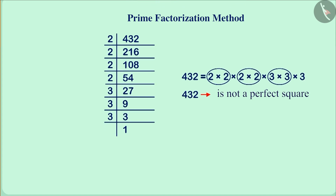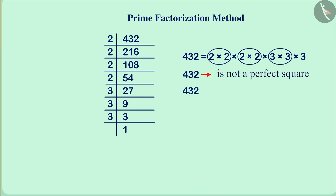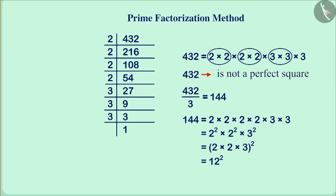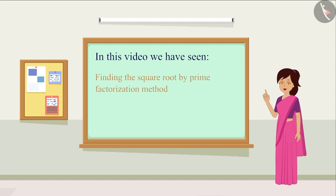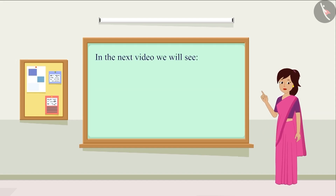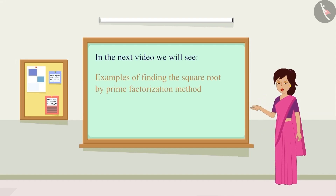There is no pair of 3 here. So, if we divide the number 432 by 3, we will get the number 144, which is a perfect square. Its square root is 12. So, we learnt to find the square root by the prime factorization method and have seen examples related to it. See you in the next video with some more examples. Thank you!